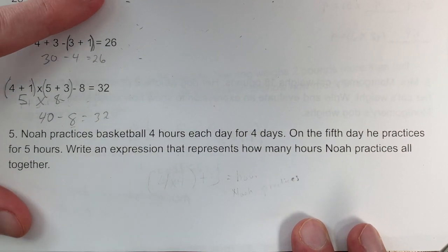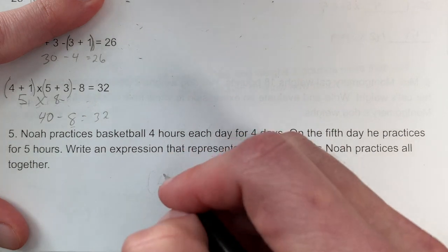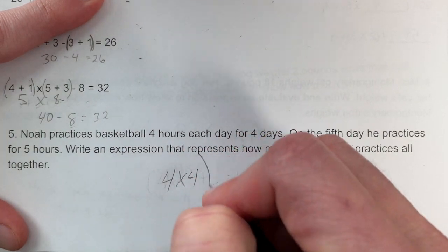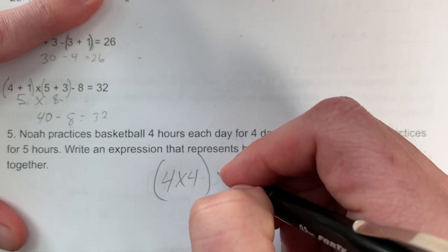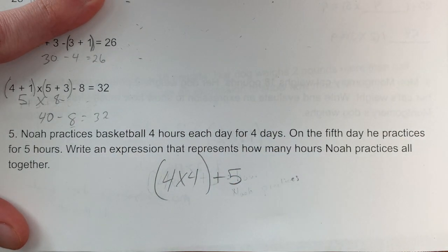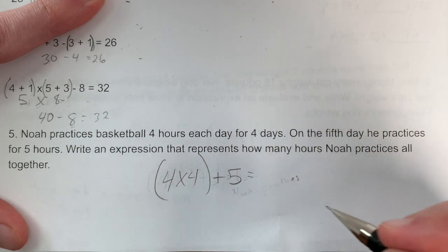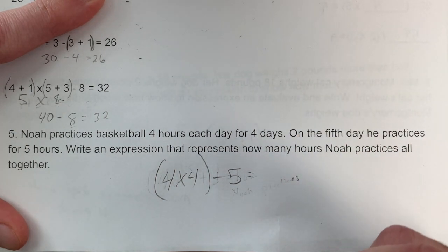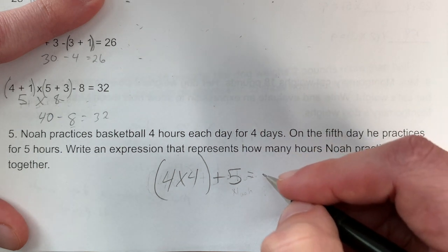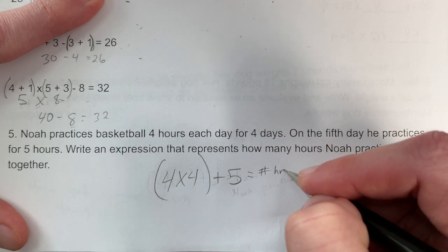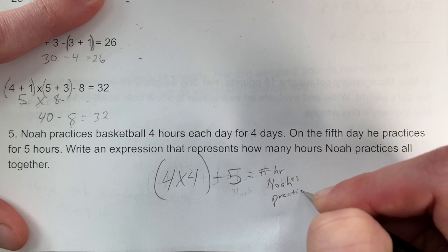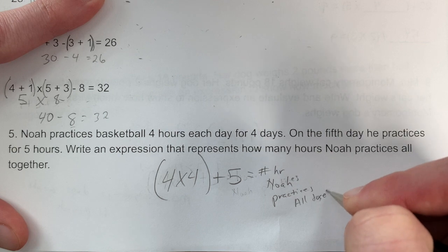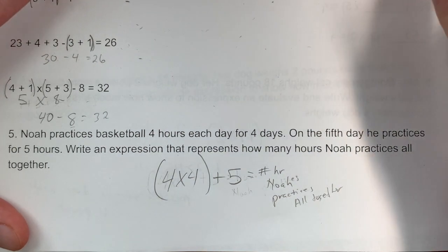Problem 5: Noah practiced basketball 4 hours each day for 4 days, so that's 4 × 4. On the 5th day he practiced 5 hours, so I add that at the end: (4 × 4) + 5. This expression represents the total number of hours Noah practiced altogether.